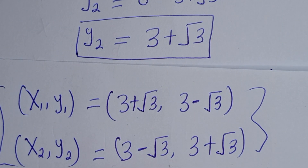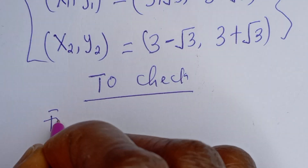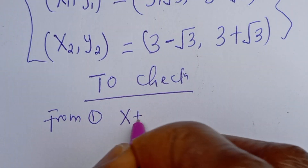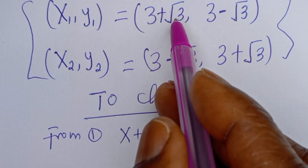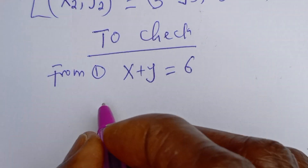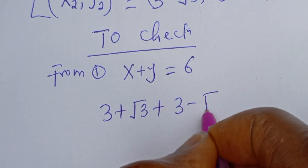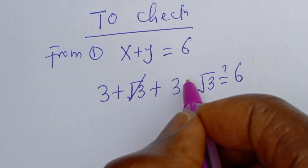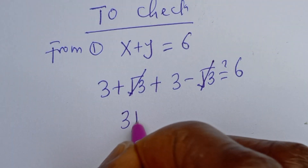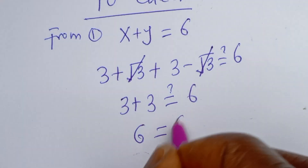Using equation 1 — s plus y equals 6 — when s is 3 plus root 3 and y is 3 minus root 3: we have 3 plus root 3 plus 3 minus root 3, which must equal 6. The root 3 terms cancel, leaving 3 plus 3 equals 6. This is true.